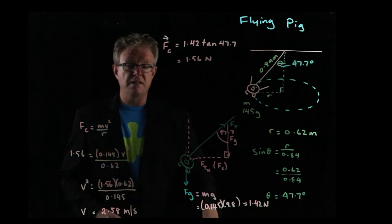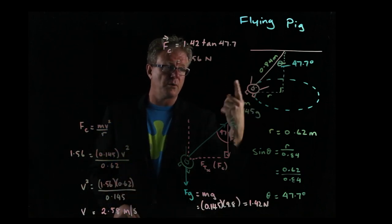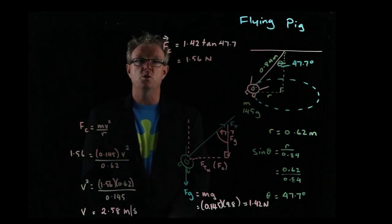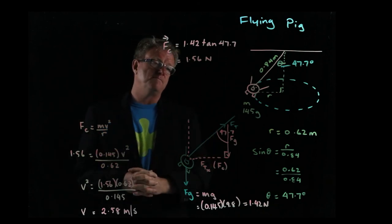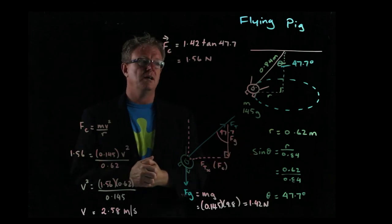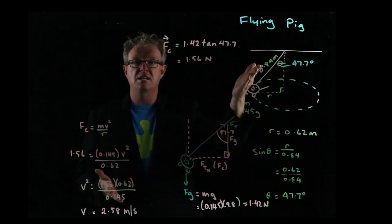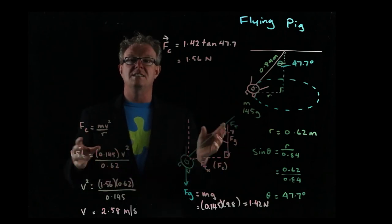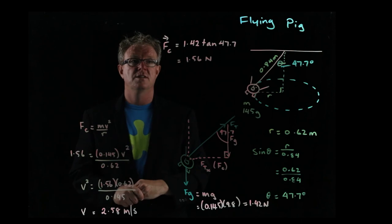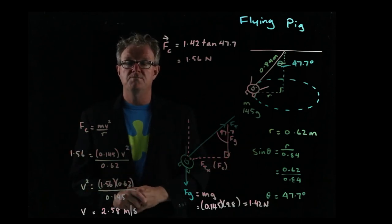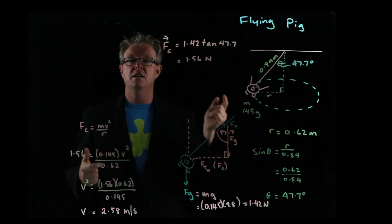That's the speed of our little piggy flying around at 2.58 meters per second. That's how you do it for a flying pig. In the lab, change the length of the string or the power, and you come up with different calculations. It's the same approach as totem tennis. Next, we'll get into banked corners.